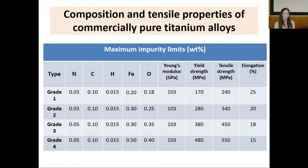There are four grades of commercially pure titanium, numbered one to four, according to their purity and oxygen content. There are also differences in some mechanical properties such as strength, corrosion resistance, and elongation.